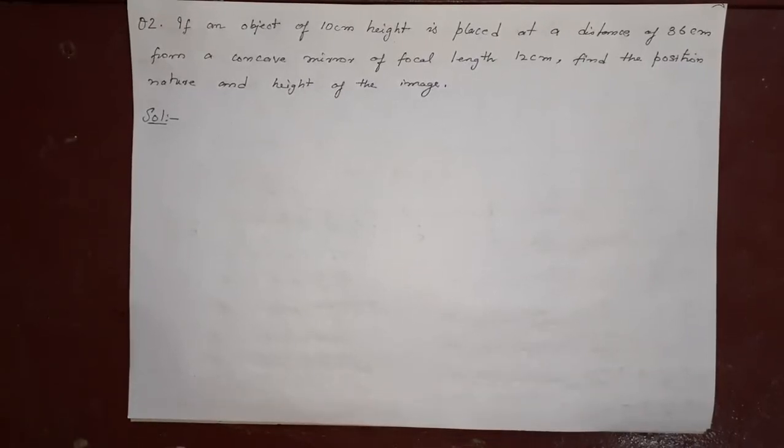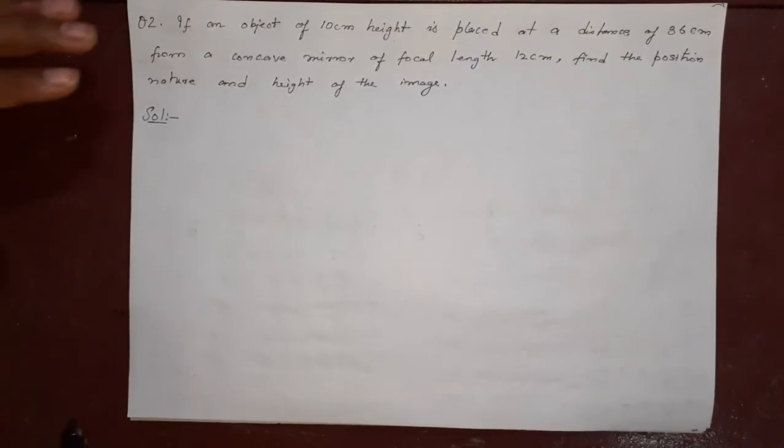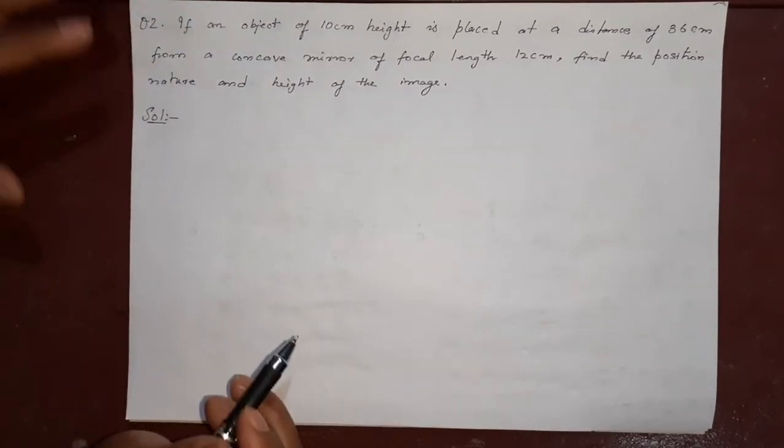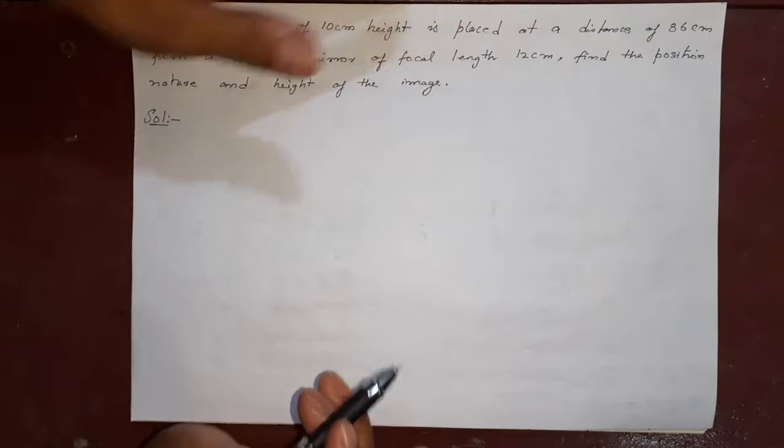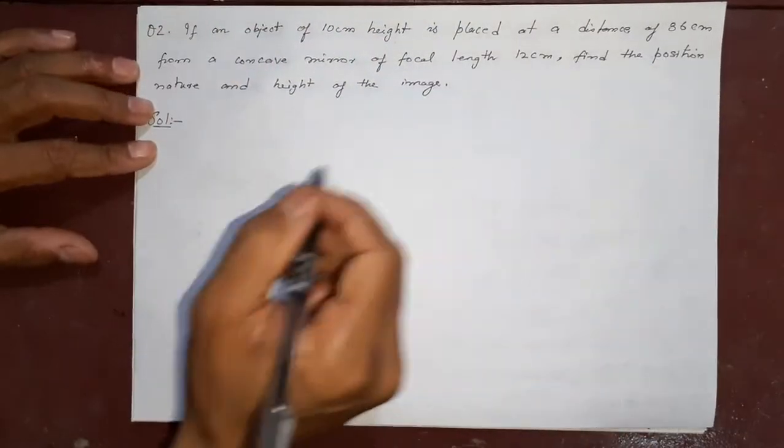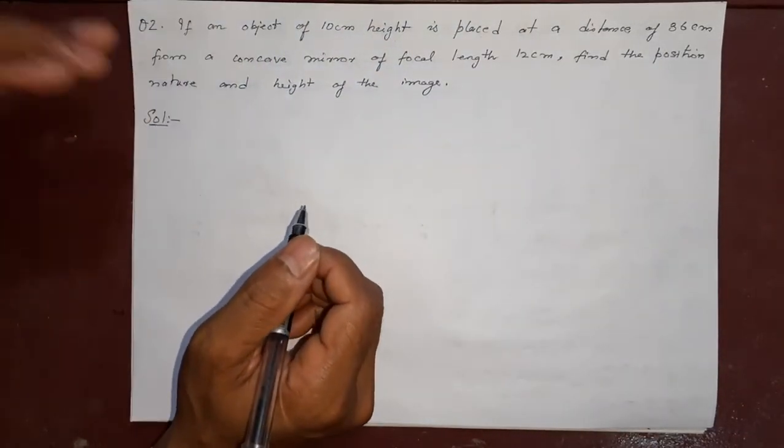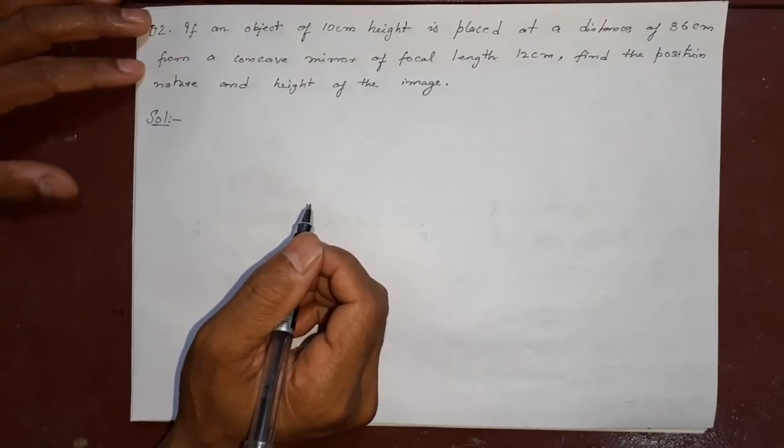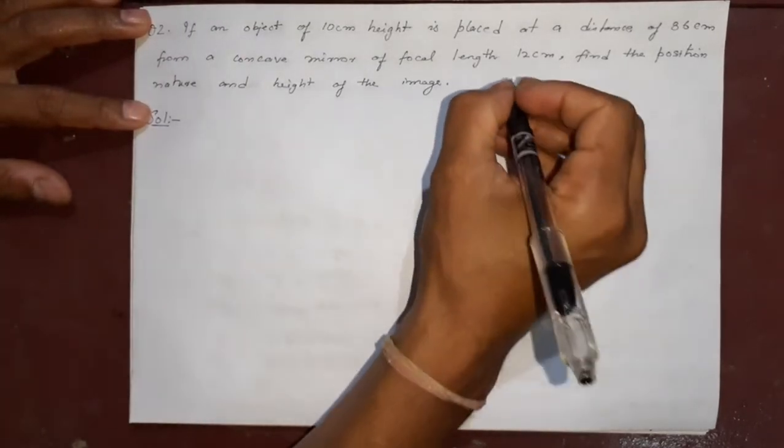Welcome back to SD Online Classes. Today we are doing Class 10, second question of your numerical page number of your textbook is 45. The question number is 2 here. This is a numerical on Chapter 1, Light Reflection and Refraction. These type of questions are asked in the exam.